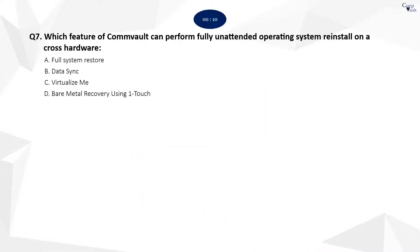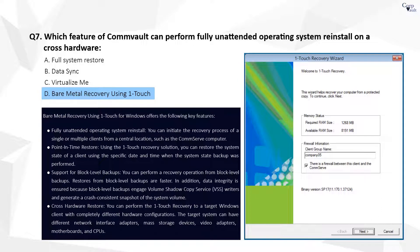Question 7. The correct answer is D. You can use Commvault's one-touch bare metal recovery to recover a failed computer, or to create a clone of a server. With one-touch, you can easily recover a computer by automatically rebuilding the operating system and all the applications on a new server that has either similar or different hardware.